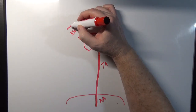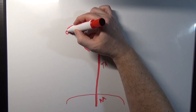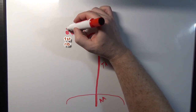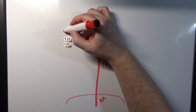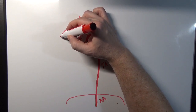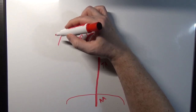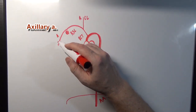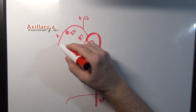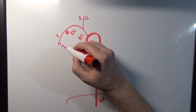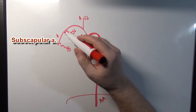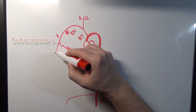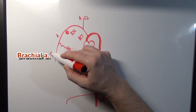Once this right subclavian artery passes a landmark — specifically the first rib — the name is going to change. It's still the same tube, but the name changes to the axillary artery. This axillary artery is going to give off a few branches. Some people like to use the subscapular artery as a landmark distinguishing between the axillary artery and the brachial artery, which is going to be down here.